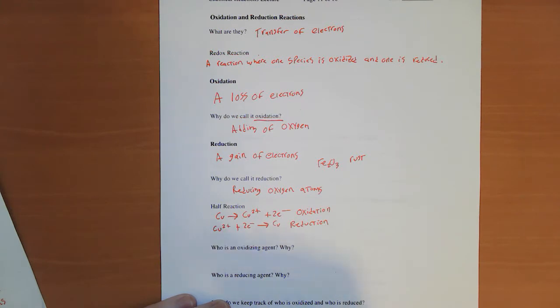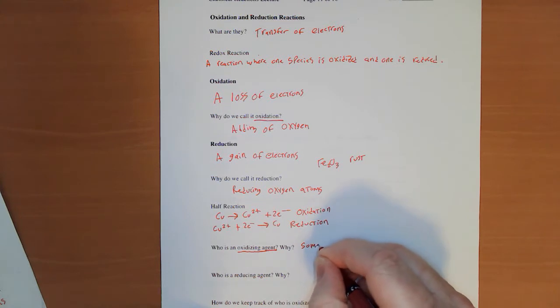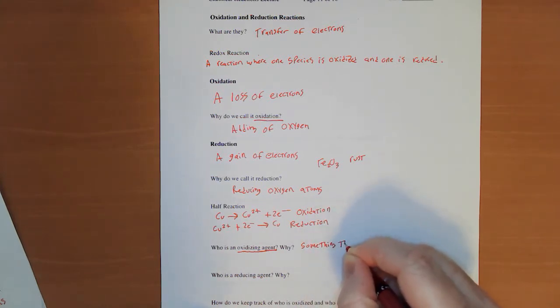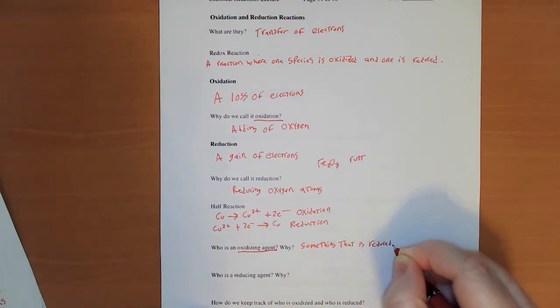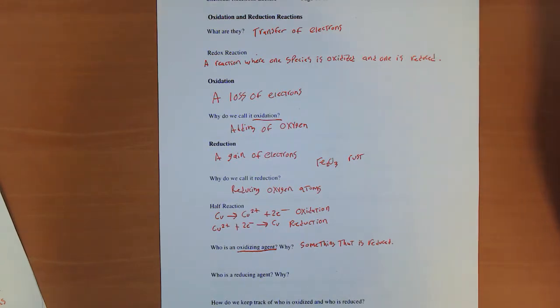Now the term oxidizing agent, it's not exactly a term that you would be tested on, but I think it's important for you to understand. An oxidizing agent is something that is reduced. Now what does that mean? If something is reduced, that means it's gaining electrons. How is it gaining electrons? They must be coming from another species.